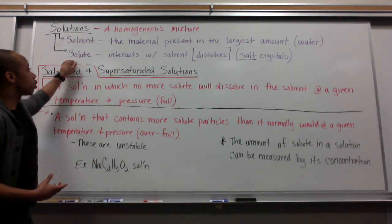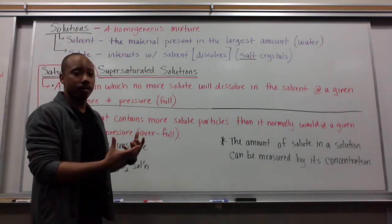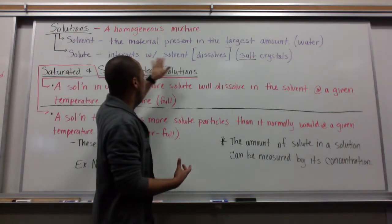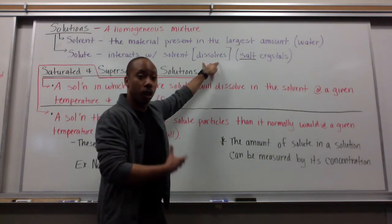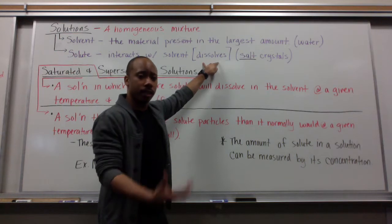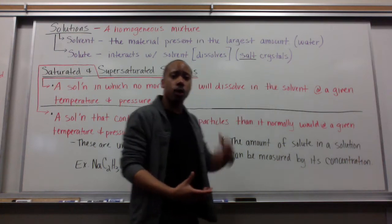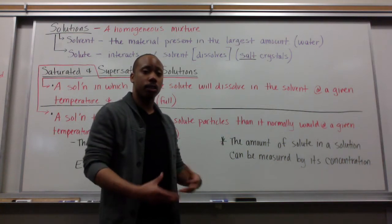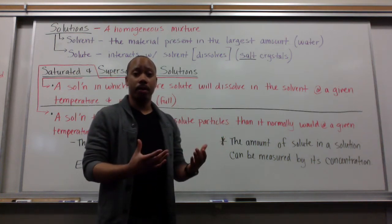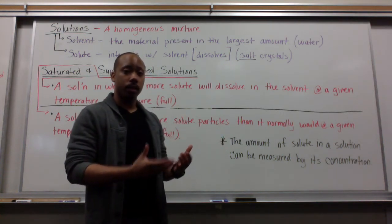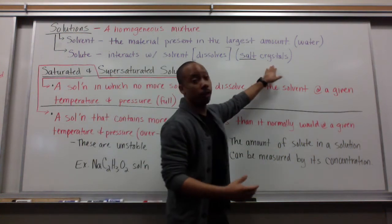Another part of the solution is the solute. The solute interacts with the solvent. It's in the lesser amount. When it interacts with the solvent, we usually say it dissolves. These are salt crystals. Salt is a very generic term in chemistry, meaning an ionic compound. A cation bonded with an anion is a salt, and usually they crystallize, so we call them salt crystals.